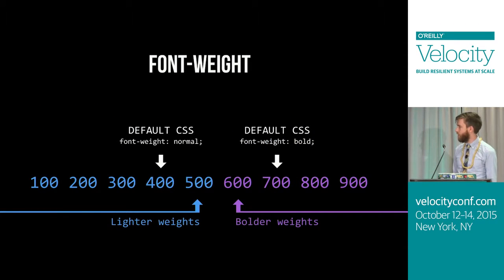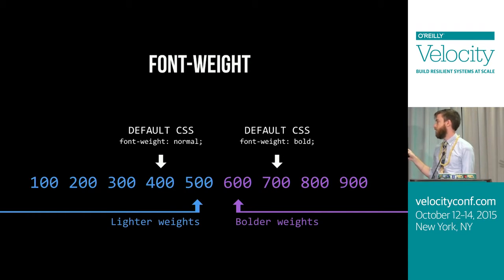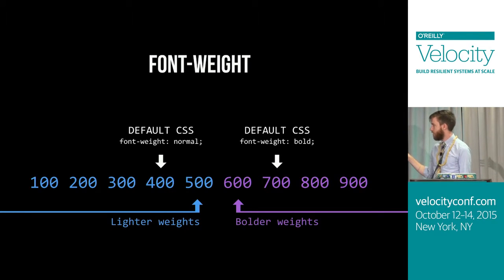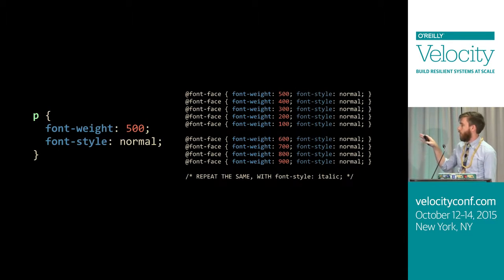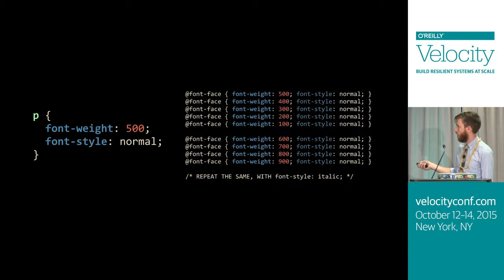What happens when there isn't an exact match with your font weights or styles? Font weight is divided into two categories: lighter weights (500 and down) and bolder weights (600 and up). If our paragraph has a font-weight of 500 and the browser can't find a match, it goes to 400, then 300, 200, 100. If none of those are found, it goes up to 600, 700, 800, 900.